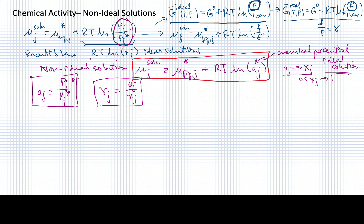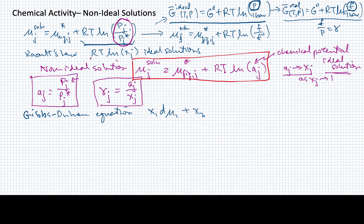We showed before in the case of Henry's Law that if one of the two components approaches Raoult's Law behavior as its mole fraction approached one, the other component had to approach Henry's Law behavior as its mole fraction approached zero. We have a similar relationship here because we can express the Gibbs-Duhem equation in terms of activities. The Gibbs-Duhem equation is: x_1 times the differential of the chemical potential of component 1, plus x_2 times the differential of the chemical potential of component 2, equals zero.